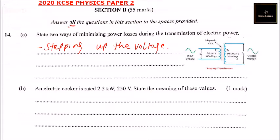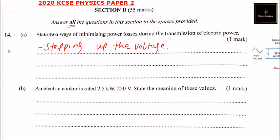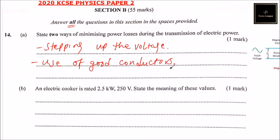The output has more windings compared to the input. The other way is the use of good conductors that have low resistance. For example, we use aluminium or copper in the transmission of power. Aluminium is most commonly used to transmit electric power.